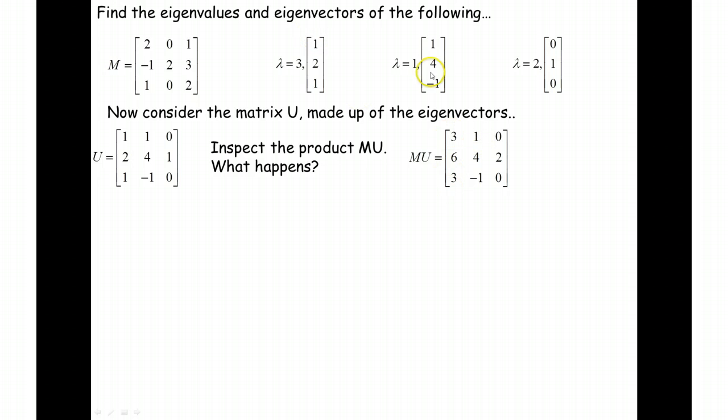So 3, 6, 3 there, 1, 4, negative 1 there, and 2 lots of that is 0 to 0. Hopefully you've spotted why that has happened because these are eigenvectors. They're going to be invariant lines to the transformation matrix of this.